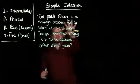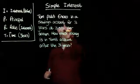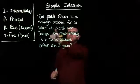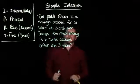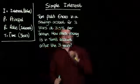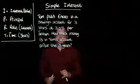Okay, simple interest question. Tom puts €4,000 in a savings account for three years at 3.5% per annum. How much money is in Tom's account at the end of the three years?